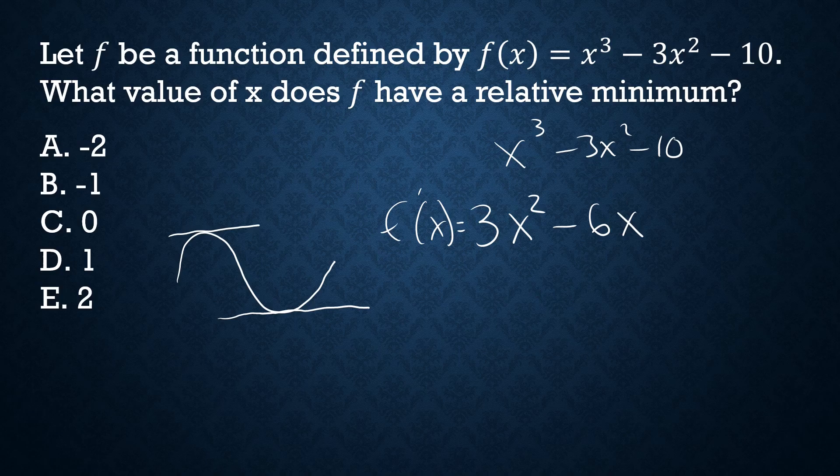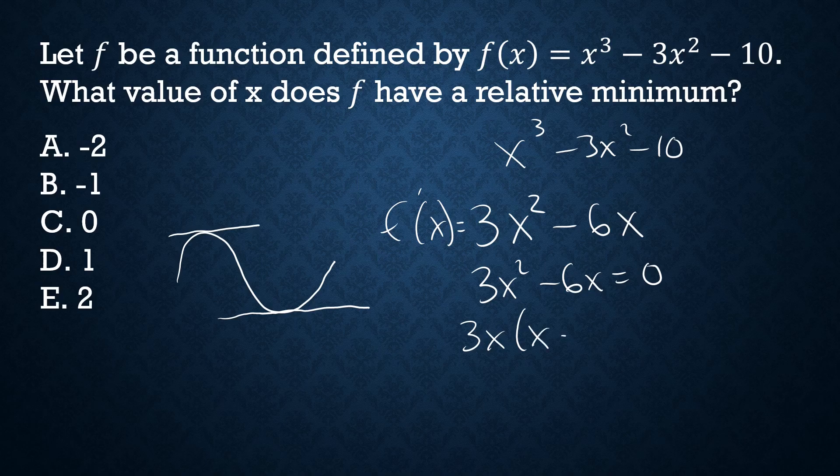Now if we set this equal to 0, 3x squared minus 6x equals 0. I can factor out a 3x, give me 3x times x minus 2. So in this case, either 3x equals 0 or x minus 2 will equal 0.